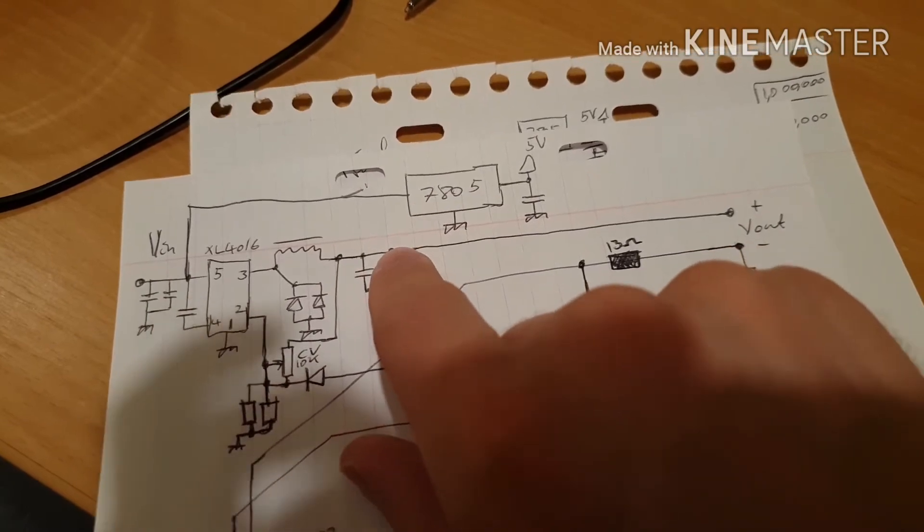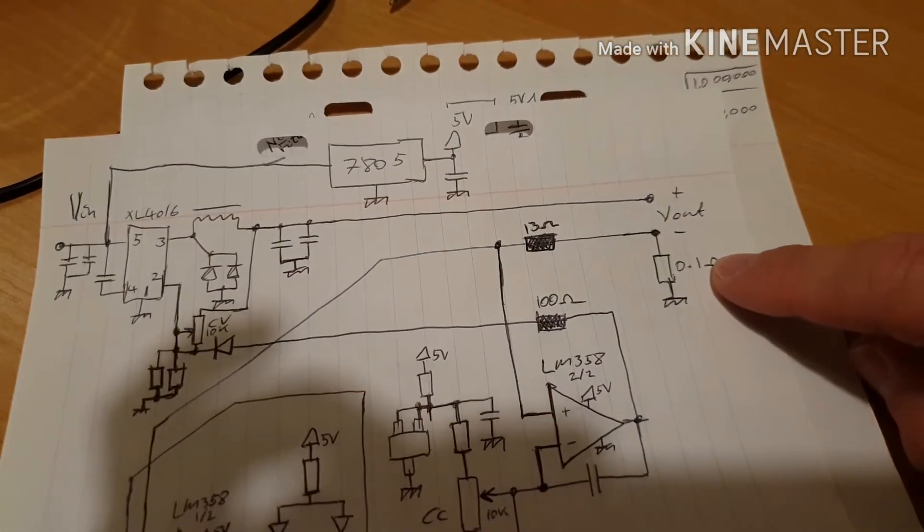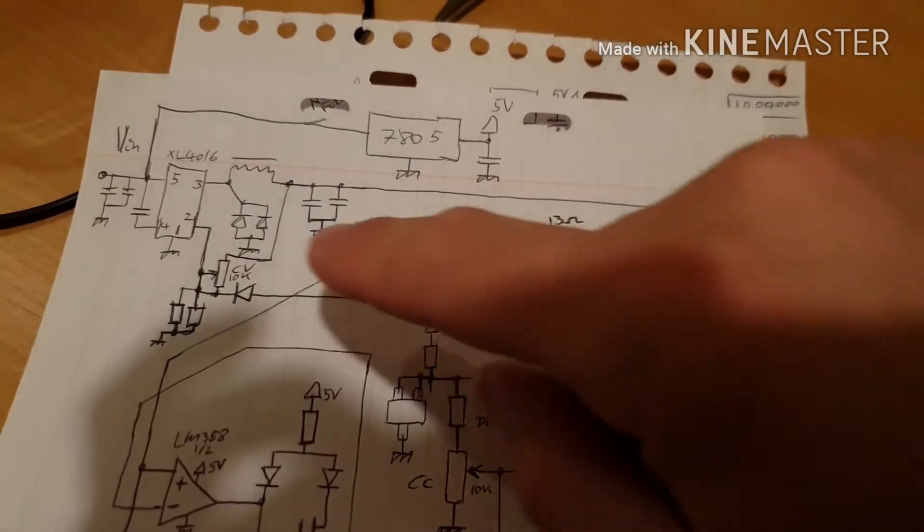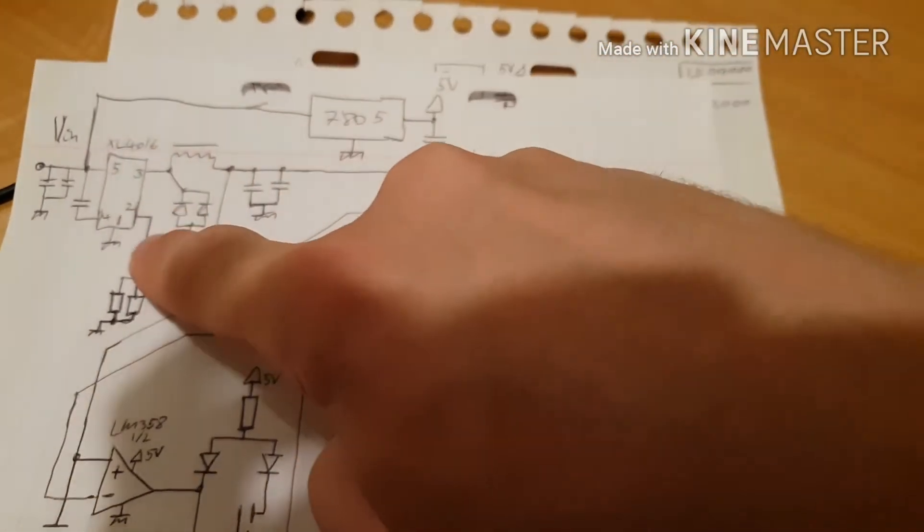This guy is going to sense that the feedback voltage is too high and turn the switcher off. Then the voltage here is going to drop to nothing, the current is going to drop to nothing, this is going to go low, this is going to switch off, and this is going to come back on again.